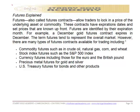Futures, also called futures contracts, allow the trader to lock in the price of the underlying asset or commodity. These contracts have expiration dates and set prices that are known up front. Futures are identified by their expiration months — for example, a December gold futures contract expires in December.